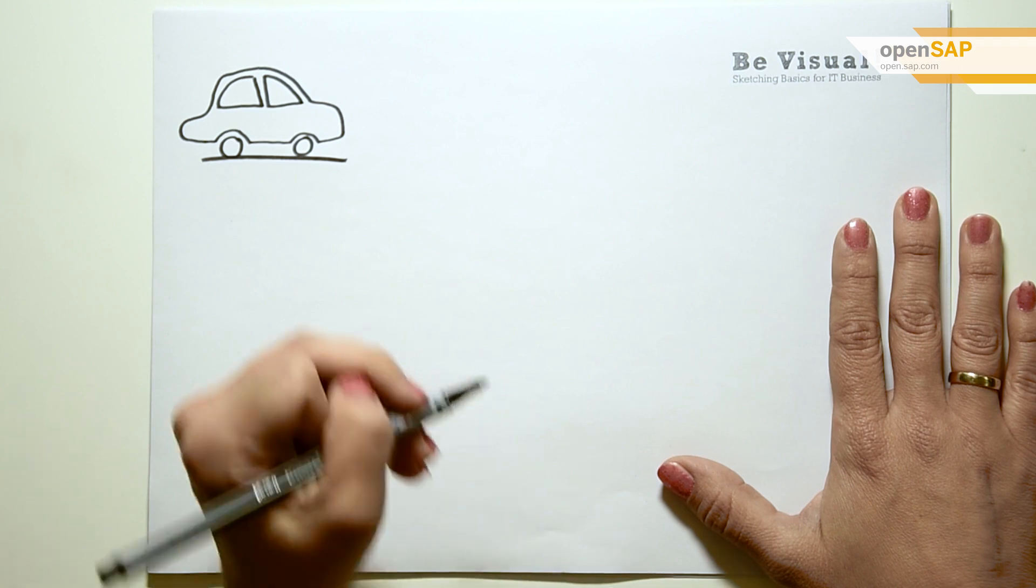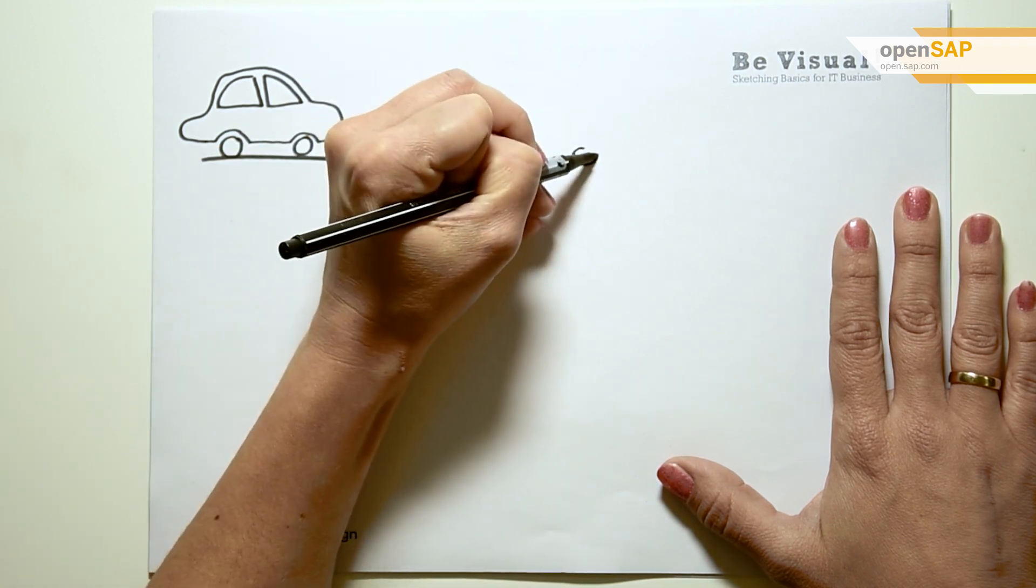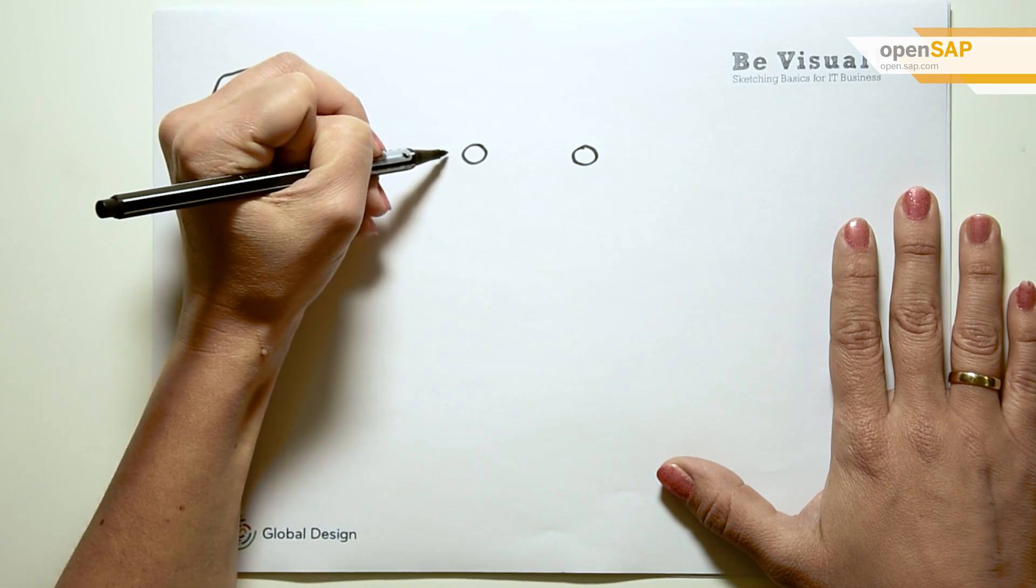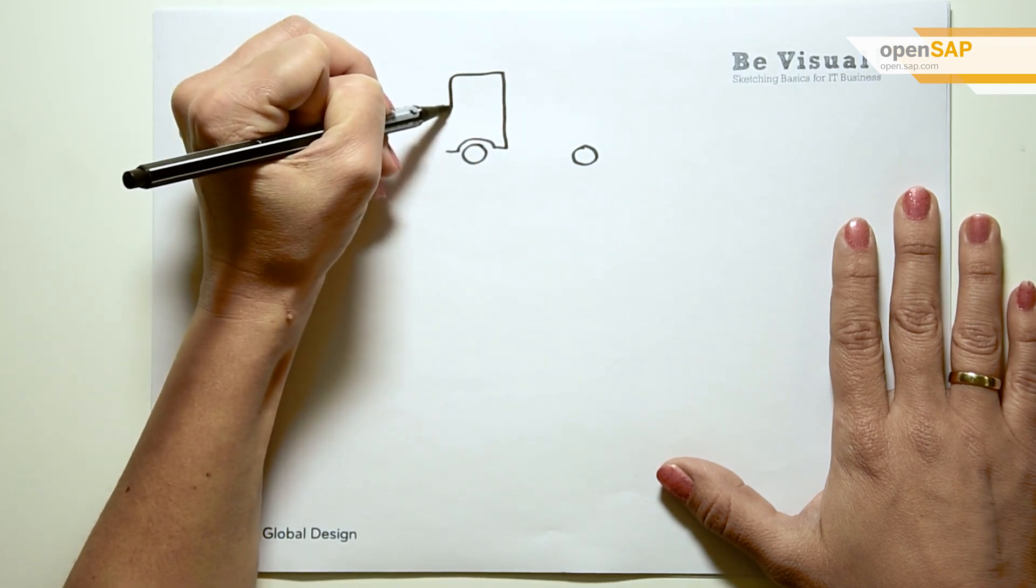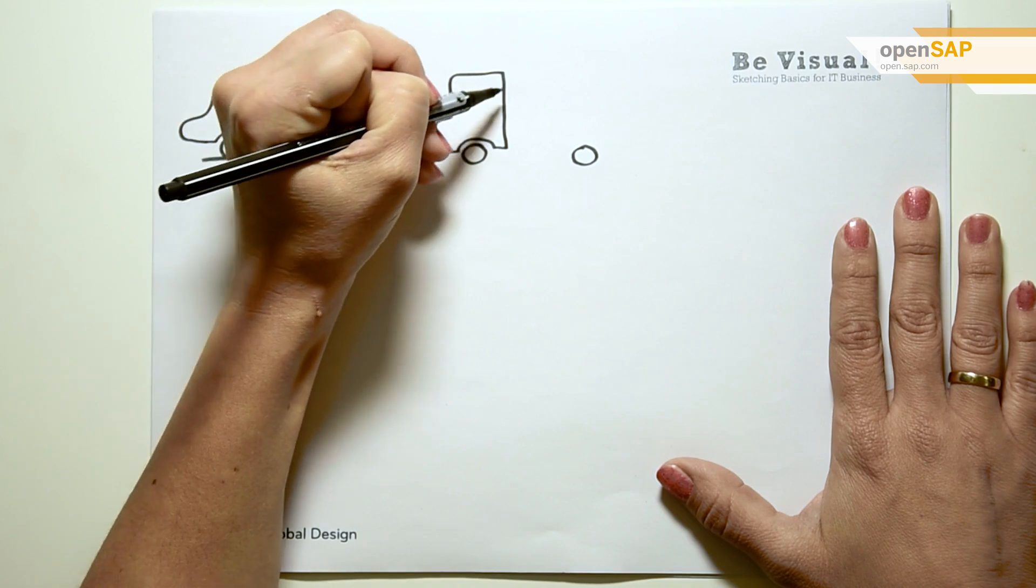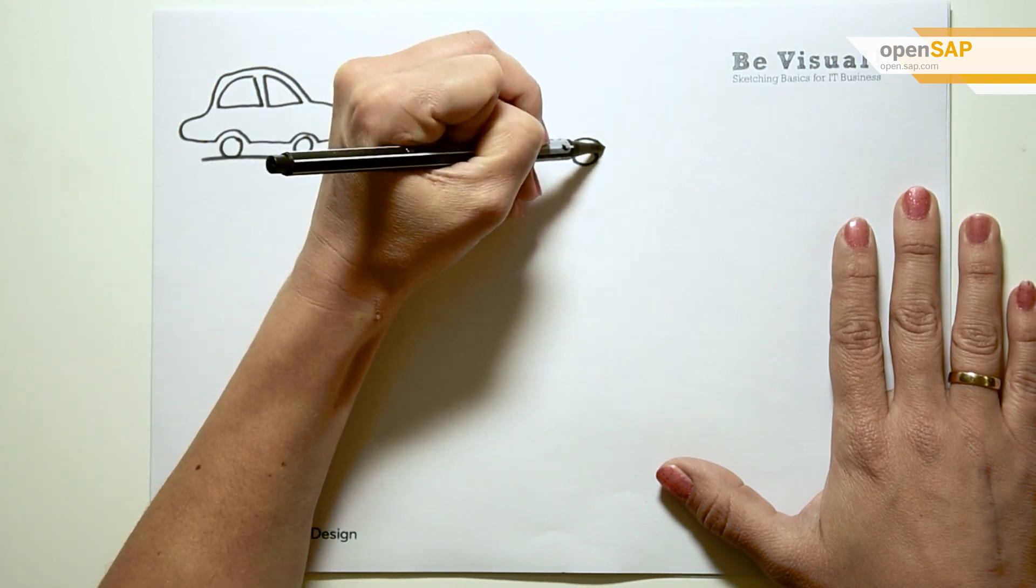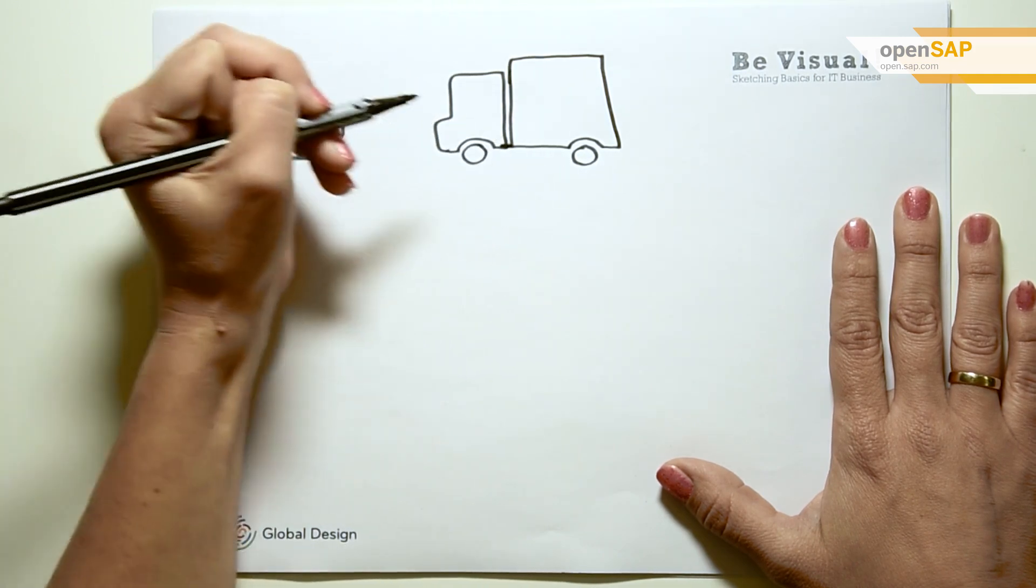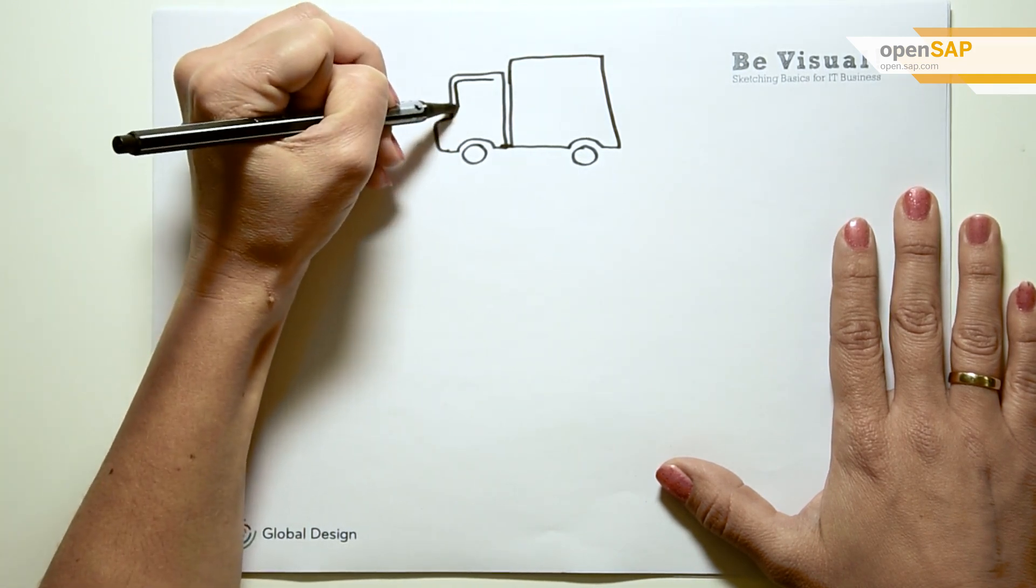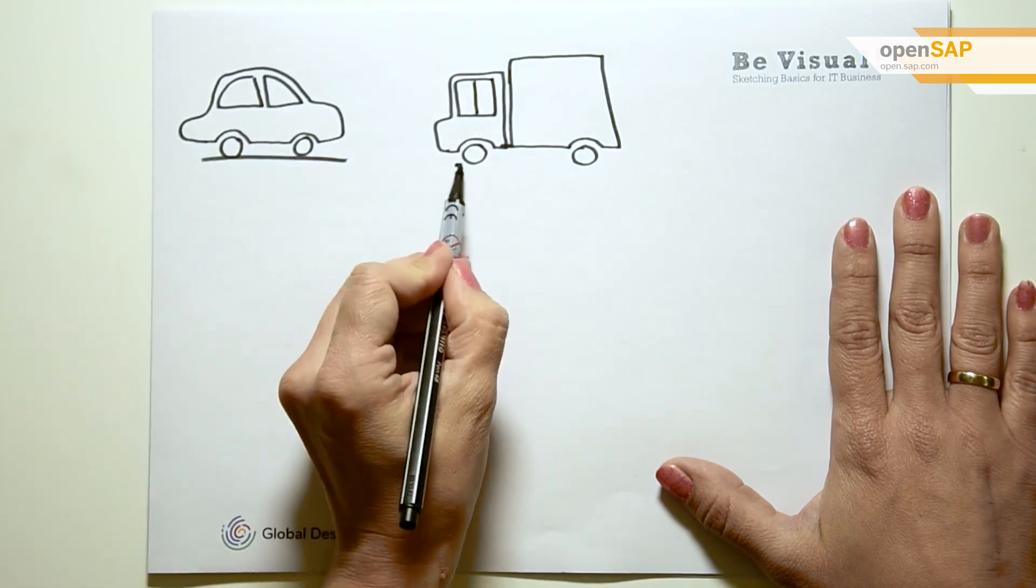A small pickup truck - start with the wheels. Sketch the driver's cab above the front wheel, and add a squared box above the back wheel. Now add some windows in the driver's cabin. Done.